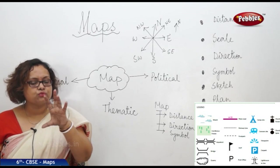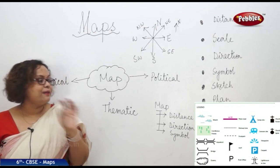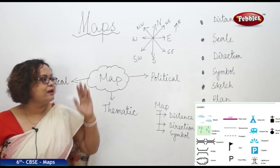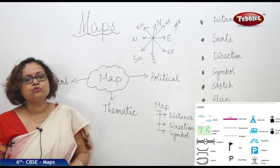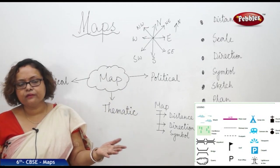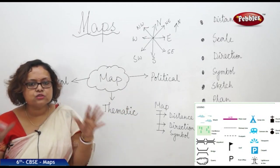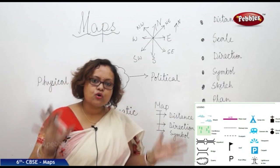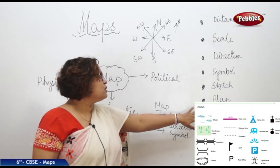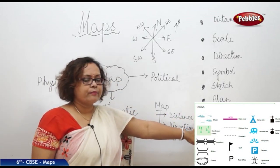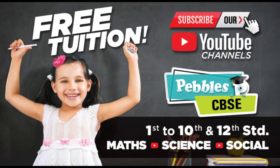For example, for your house you can make a plan showing where your drawing room, dining room, and kitchen are located — all drawn on a piece of paper using a scale. That is a plan.